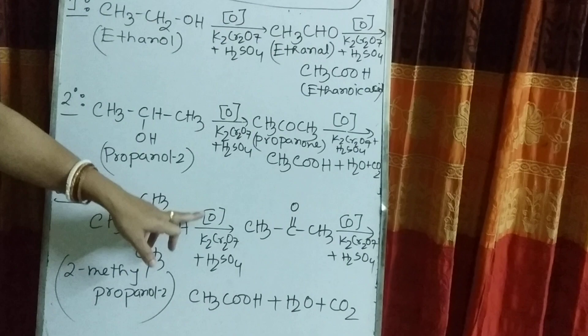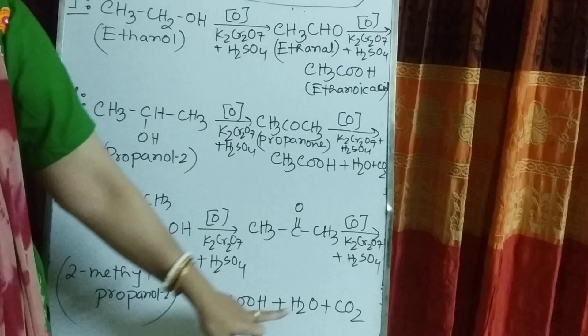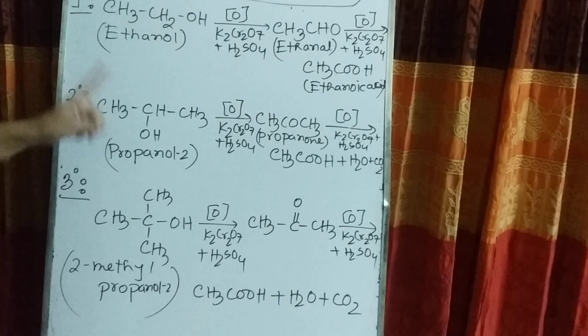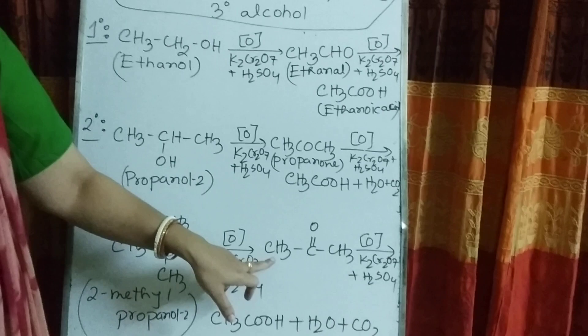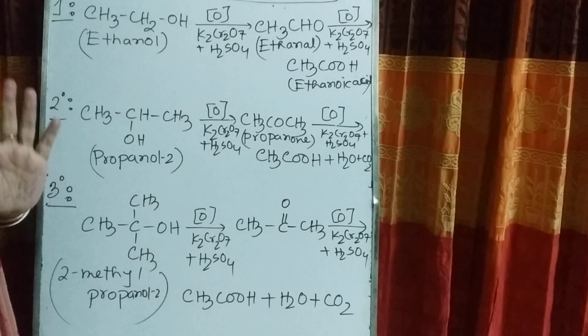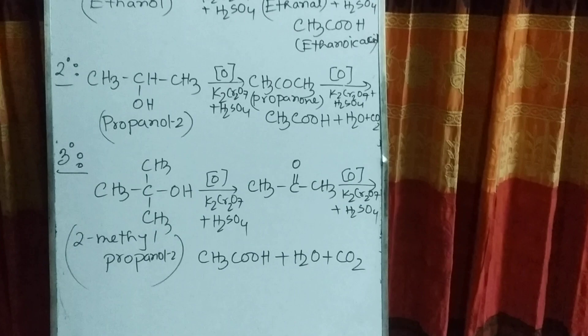For tertiary alcohol, I have taken 2-methylpropan-2-ol. When oxidized, it converts to propanone, which again oxidized converts to ethanoic acid, water, and carbon dioxide. In 2-methylpropan-2-ol there are 4 carbons, in propanone 3 carbons, and in ethanoic acid 2 carbons. So carbon number is gradually decreased when tertiary alcohol is oxidized.